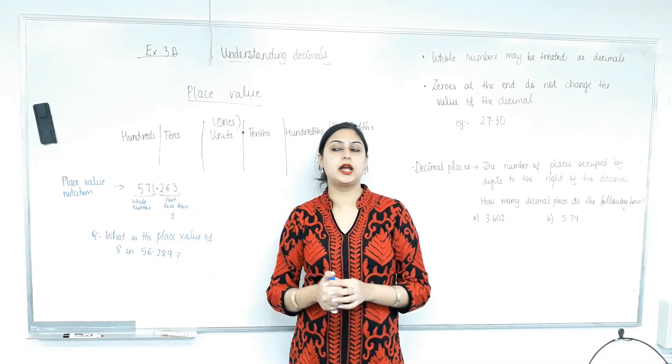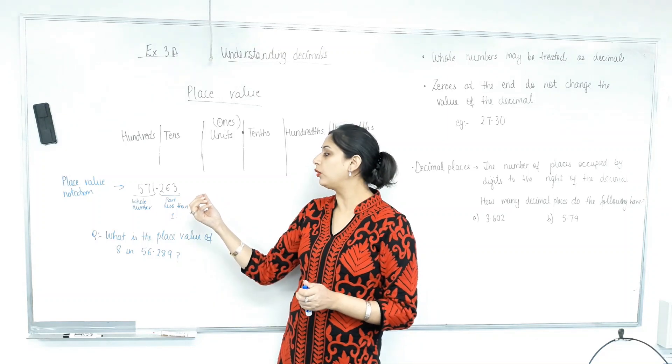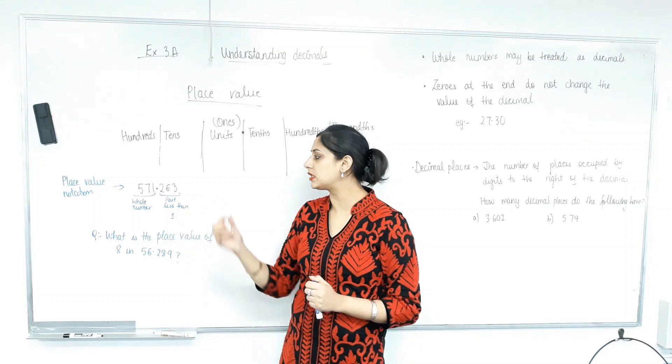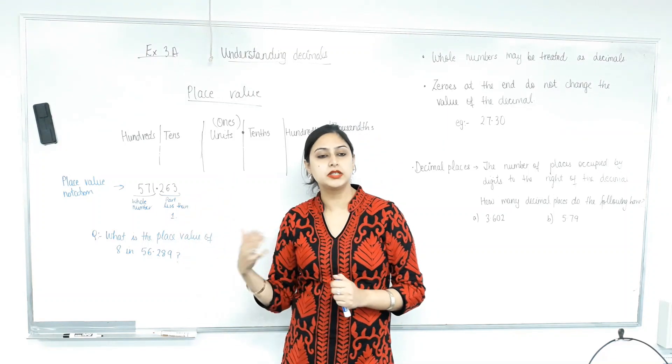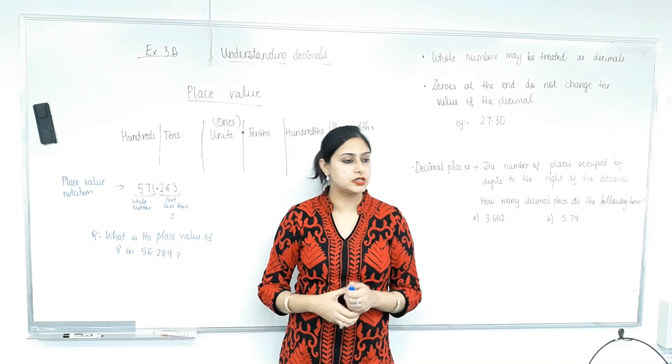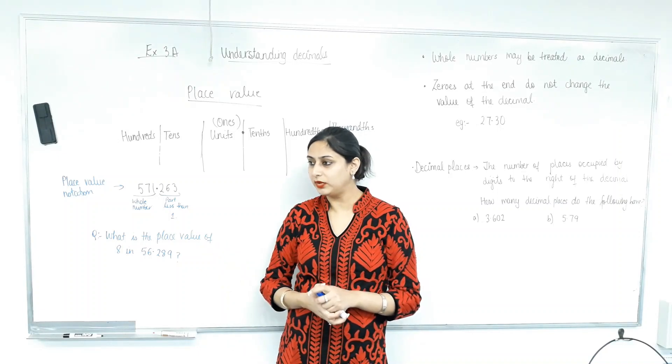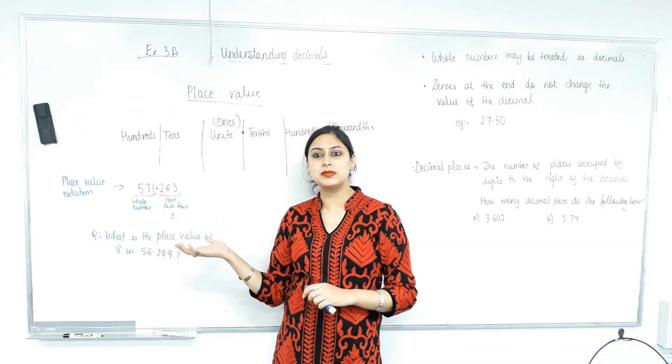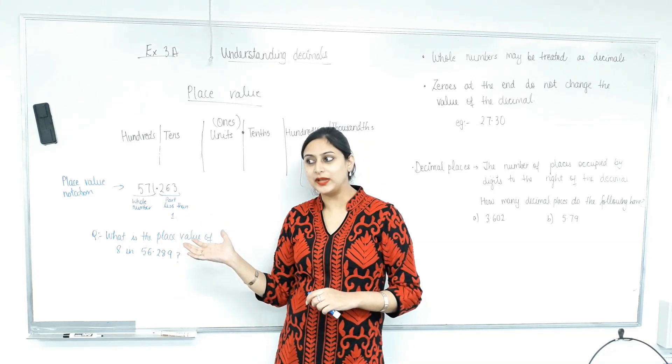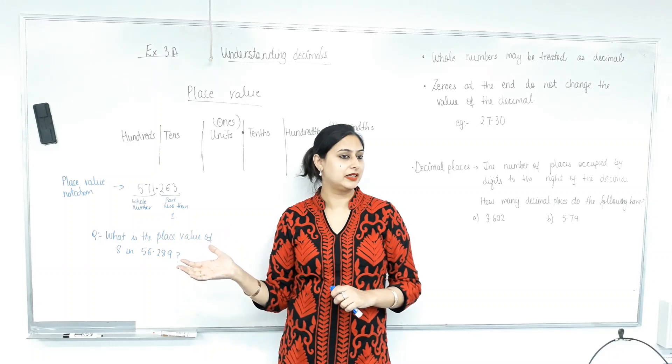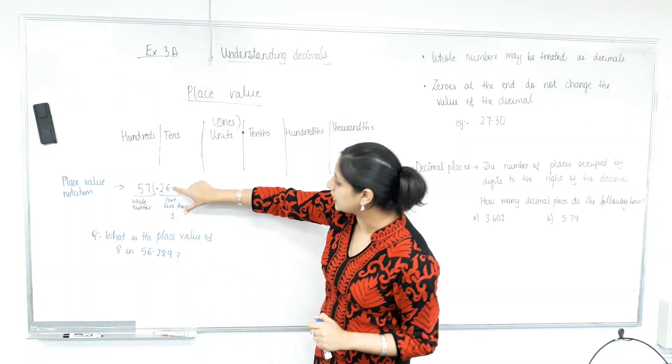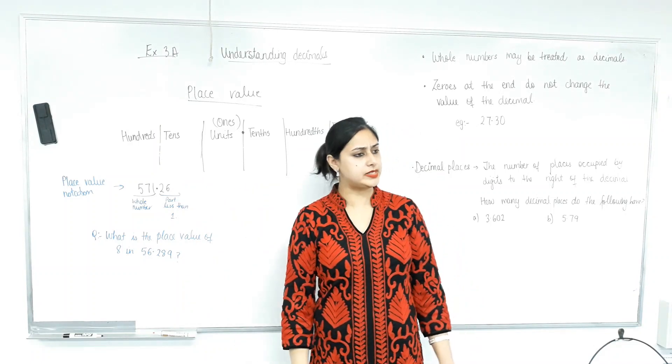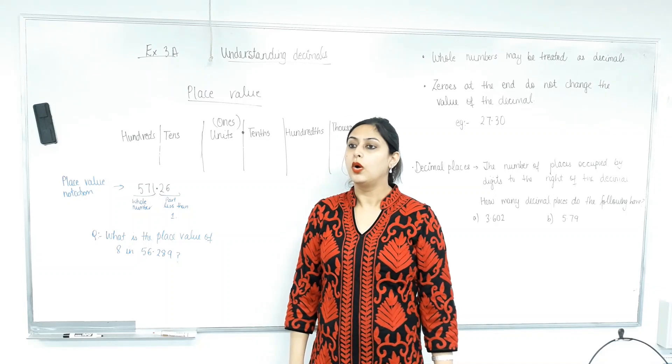So, 571 is the whole number part, and then 0.263 is the decimal part. Now, has anyone noticed that I'm after the decimal, I'm not saying 263. I'm just saying 263. Am I just being stupid because it's period six? No. No? No. Am I ever stupid? No. So, there must be a reason behind it. Am I saying the right thing? Yes. Yes.